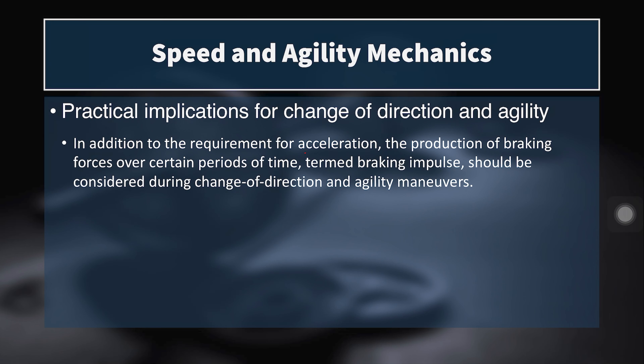After examining these graphs, we must remember that in addition to acceleration, the production of braking forces over time — the braking impulse — should be considered during change of direction and agility maneuvers. It's not all about accelerating; as you decelerate, braking forces are much higher than propulsive forces, because we need a net negative acceleration for velocity to reach zero before changing direction. Even though it happens very quickly and doesn't look like a stop to the eye, the athlete decelerates all the way to zero before they can go the other way.